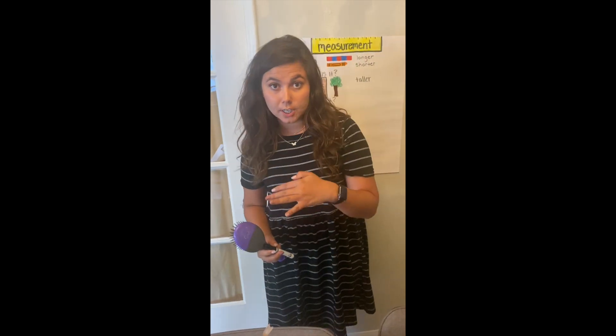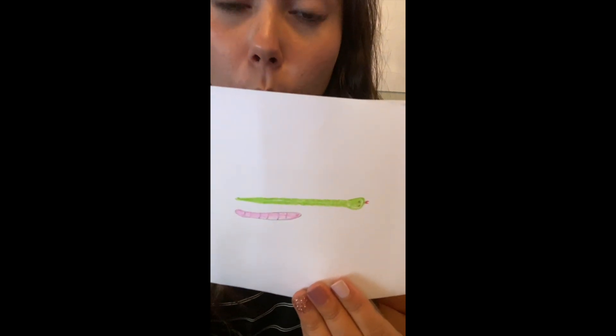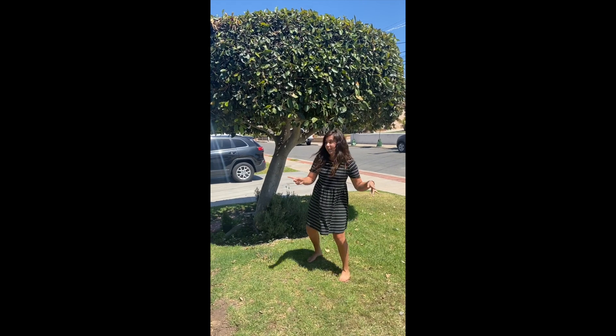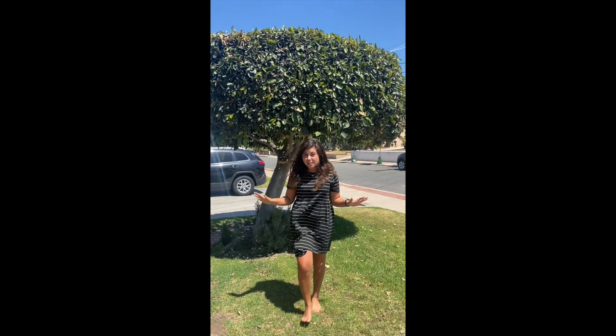Now let me show you your challenge. Go around your house, find some objects, and tell me if they're longer, shorter, or taller. For example, I found my hairbrush and a marker - my hairbrush is taller than my marker. Or maybe instead of finding an object, you want to draw it. I drew a snake and a worm and I can say my snake is longer than my worm, or my worm is shorter than my snake. Or you could find something outside - I found a tree in my front yard and I am shorter than the tree; the tree is taller than me. Go find your objects, record your video, and tell me about the things you find that are shorter, longer, or taller.